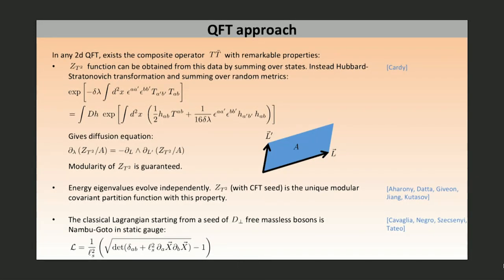To transition to the S-matrix discussion, let me point out that one example of TT-bar deformed theories is the Nambu-Goto string in static gauge. We take d-perp free massless scalars as a starting point, implement the TT-bar deformation, and we get this classical Lagrangian.